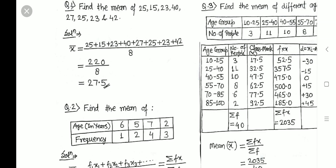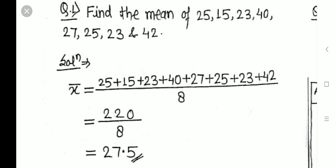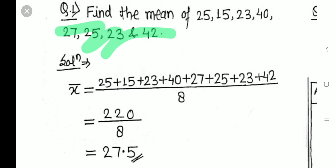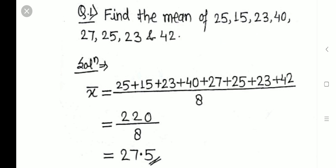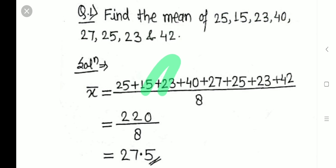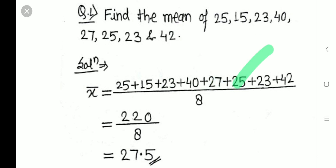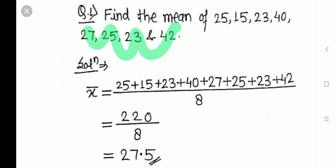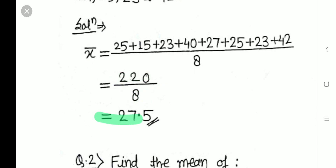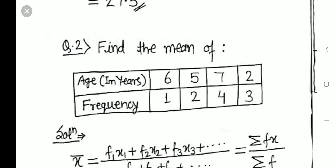Mean is also calculated this way. Find the mean of: 25, 15, 23, 40, 27, 25, 23, and 42. To calculate the mean, take the addition of all values and divide by their count. Adding: 25+15=40, +23=63, +40=103, +27=130, +25=155, +23=178, +42=220. Total sum = 220, number of data = 8. So 220 ÷ 8 = 27.5. The mean is 27.5.